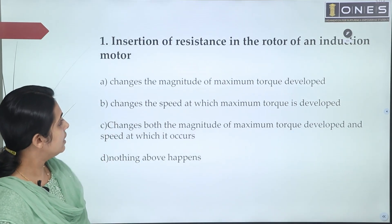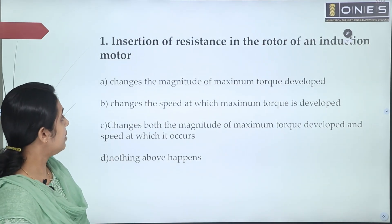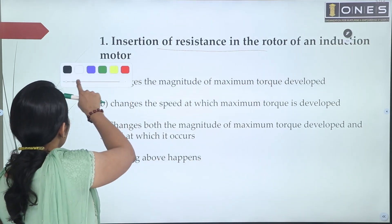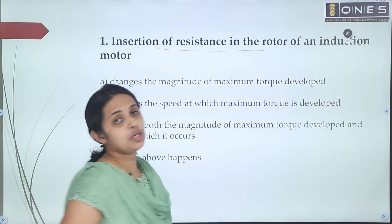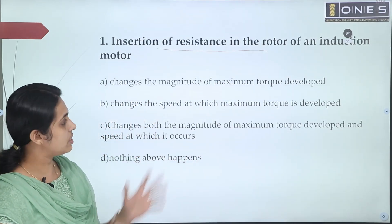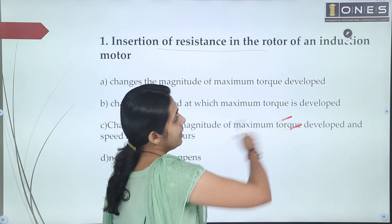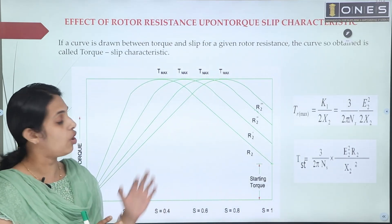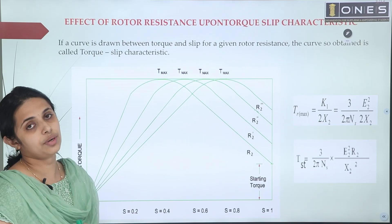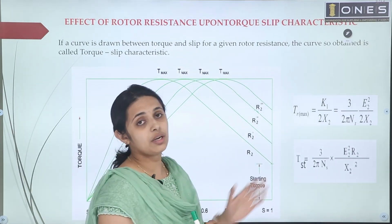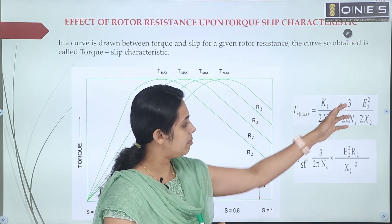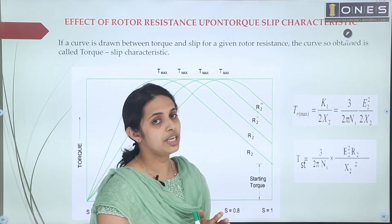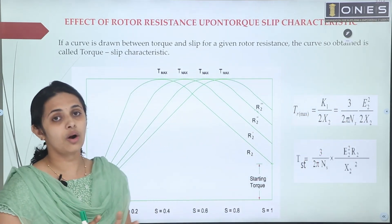In the case of an induction motor, we are going to add external resistance to the rotor. We are going to discuss the maximum torque and starting torque, and the torque-slip characteristics. As the value of R2 is increased, we discuss the variations in maximum torque and starting torque under the condition that rotor reactance X2 is constant.